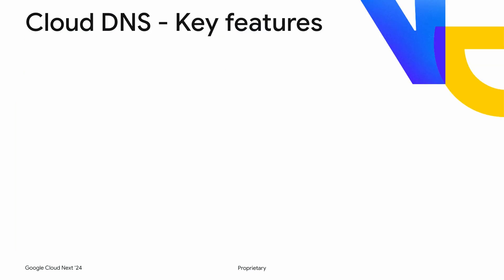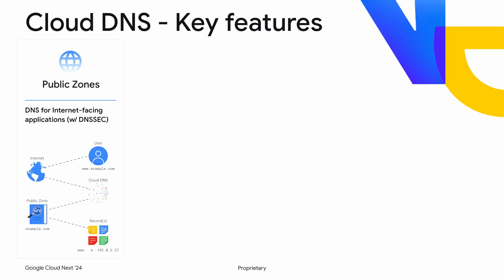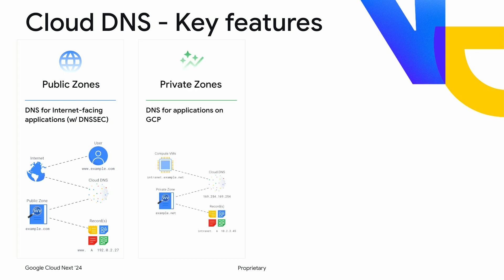Let's talk about some key features. Public zones: if you have a service you want to expose over the internet to your end users, you create a DNS entry within a public zone for that service. Private zones are used if you want to make a service accessible only internally within your own environment — these are services that are never exposed to the outside world.